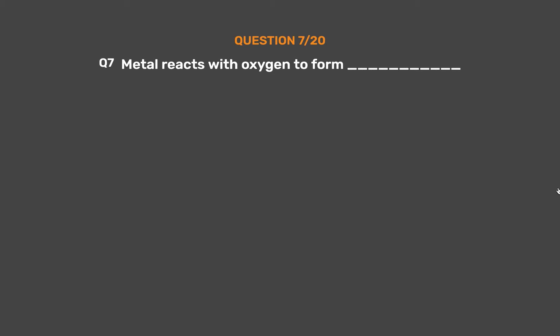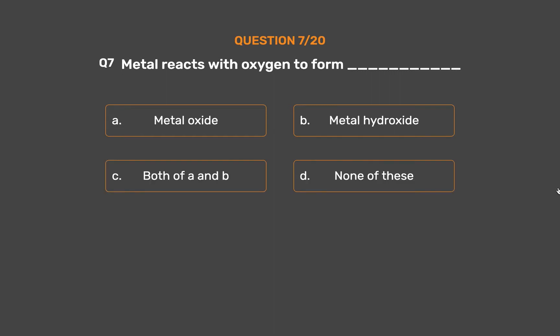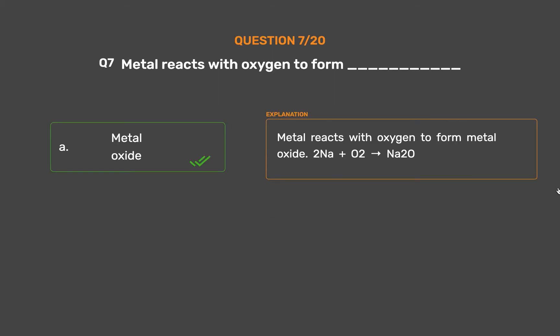Question number 7. Metal reacts with oxygen to form ___. Option A: Metal oxide. Option B: Metal hydroxide. Option C: Both A and B. Option D: None of these. The correct answer is Option A: Metal oxide. Metal reacts with oxygen to form metal oxide. For example: 2Na + O₂ → Na₂O.